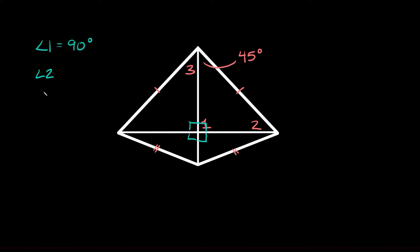Now let's solve for angle two. If we know this is 90 degrees, you can see we have a triangle right here, and remember all the angles inside of a triangle always add up to 180 degrees. So if this is 90 and this one right here is given as 45, then angle two must also be 45 degrees, because 90 plus 45 plus 45 is equal to 180.